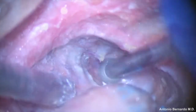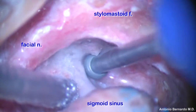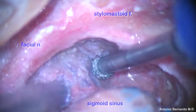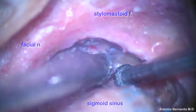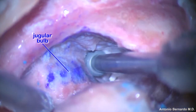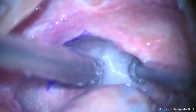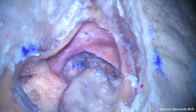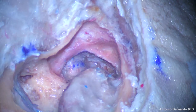Once the facial nerve has been exposed, drilling proceeds anteriorly and posteriorly. The stylomastoid foramen is fully skeletonized, the sigmoid sinus is skeletonized all the way up to the jugular bulb, and the sub-labyrinthine space is completely open. At this stage, the pre-sigmoid dura has been uncovered, the middle fossa dura has been exposed, the sub-labyrinthine space is open, and the entire labyrinthine block is completely isolated.